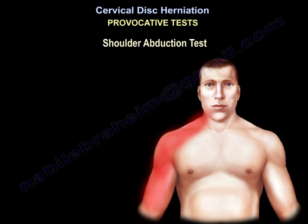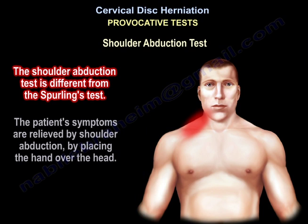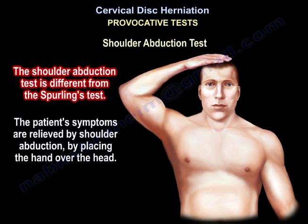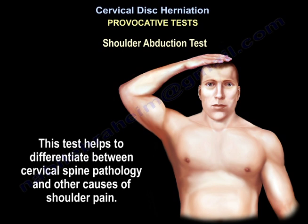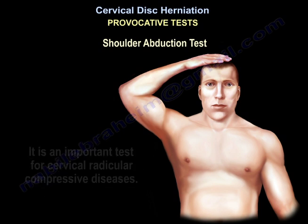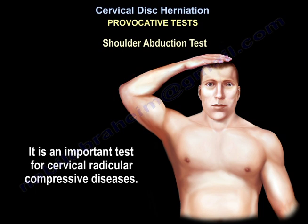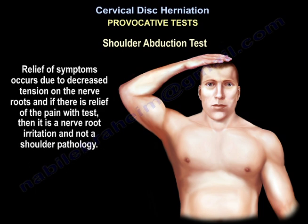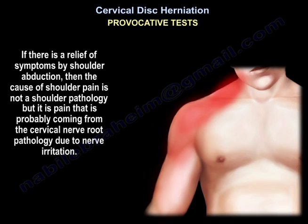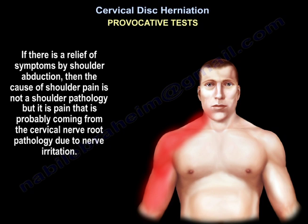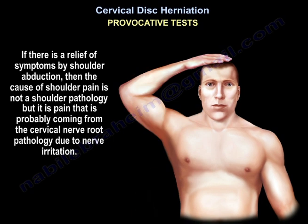The shoulder abduction test is different. The patient's symptoms are relieved by shoulder abduction — placing the hand over the head. This test helps differentiate between cervical spine pathology and other causes of shoulder pain, and is an important test for cervical radicular compressive disease. Relief of symptoms occurs due to decreased tension on the nerve roots. If symptoms are relieved by shoulder abduction, the cause is not shoulder pathology but likely cervical nerve root irritation.